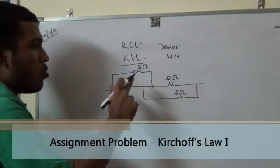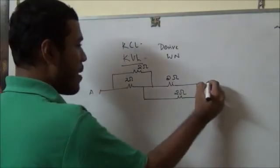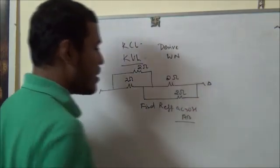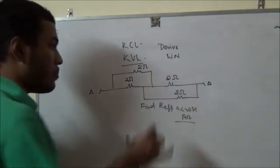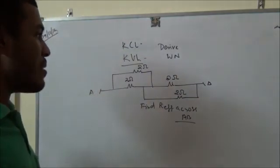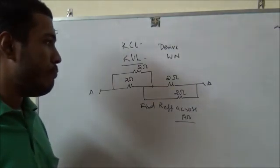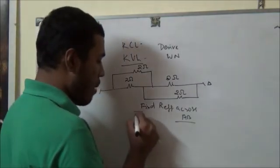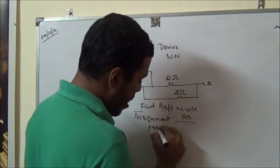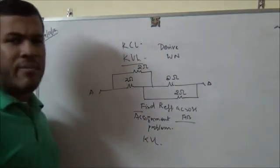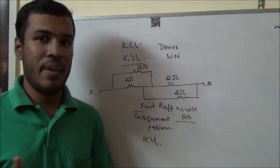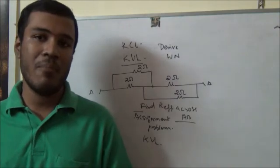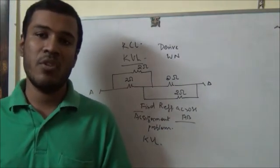The assignment problem: you have a network of 2-ohm, 2-ohm, and 2-ohm resistors with two points A and B. Find the effective resistance across AB. This is a popular public examination question. In the next module when we discuss KVL, I will solve this problem and then go to KVL. Thanks a lot for watching this video. Please subscribe to youtube.com/knowledge-charity, share with your friends, and bring more subscriptions to promote the knowledge forum we are trying to achieve. Thank you.